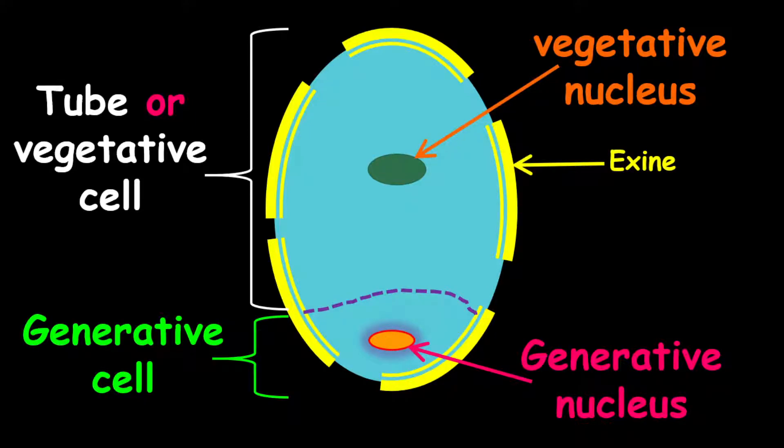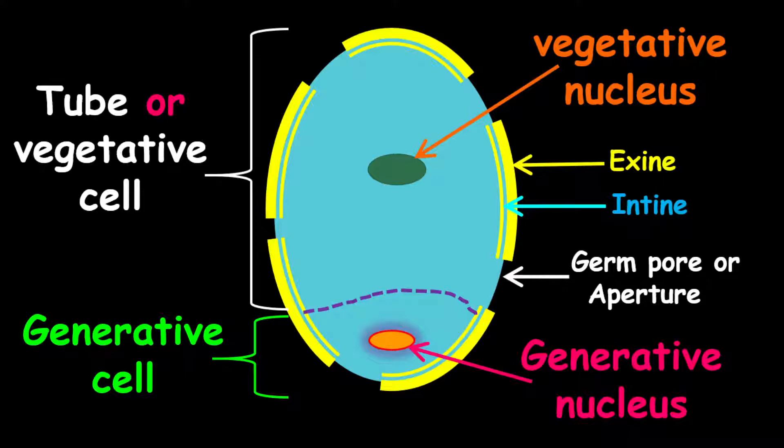Also we have on the pollen grain the external membrane, which is called the exine. The internal membrane is called the intine, and we also have what they call a germ pore or an aperture.